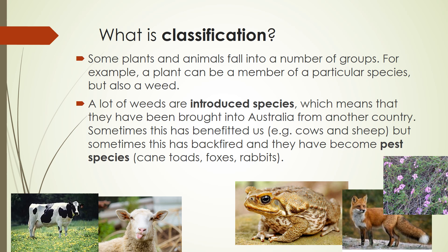Some plants and animals actually fall into a number of groups, not just one. For example, a plant can be a member of a particular species but also be classified as a weed. Many weeds are introduced species — brought to Australia from another country. Sometimes introduced species are beneficial, like cows and sheep. But sometimes they backfire and become pest species: cane toads, foxes, and rabbits were all introduced and now kill off native wildlife. Lantana is a pest plant that chokes native plants.